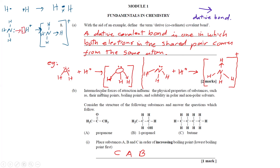Part b: intermolecular forces of attraction influence physical properties such as melting points, boiling points, and solubility in polar and non-polar solvents. Consider substances a) propanone (acetone), b) propan-1-ol, and c) butane. Place substances a, b, and c in order of increasing boiling point, starting from the lowest.